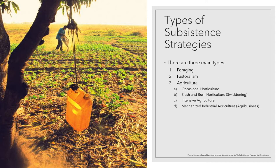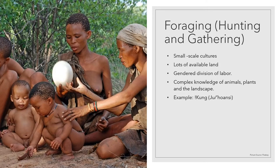Within agriculture, we have occasional horticulture, slash and burn horticulture also known as swiddening, intensive agriculture, and finally mechanized industrial agriculture also known as agribusiness. I'm going to go into a little more detail about each of these. Let's start with foraging. Foraging is the type of subsistence strategy that humans have used for the longest — until about 10,000 years ago, it was the only subsistence strategy that we used.